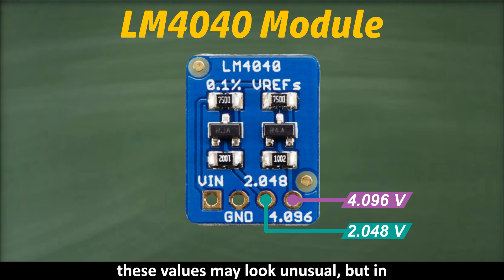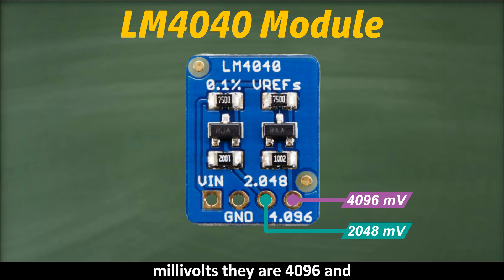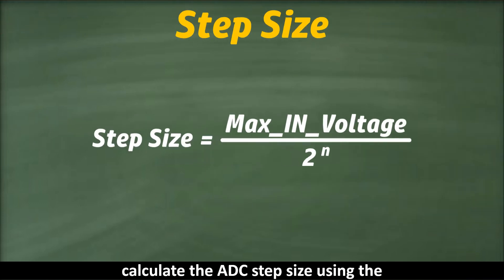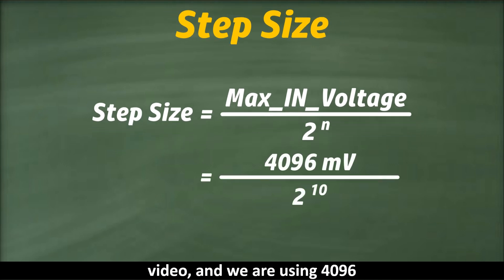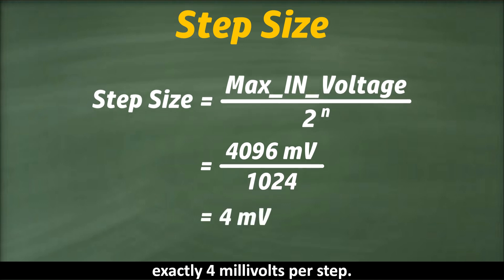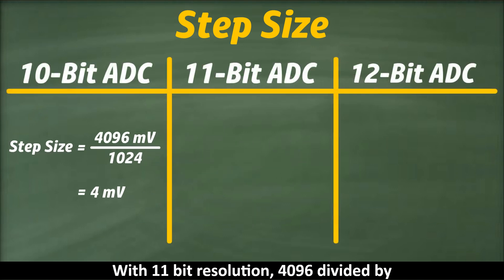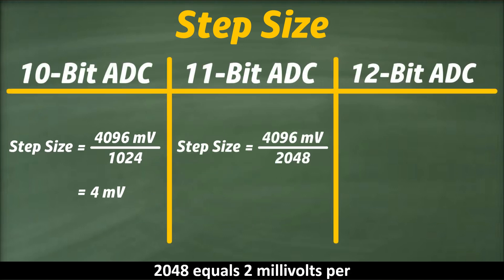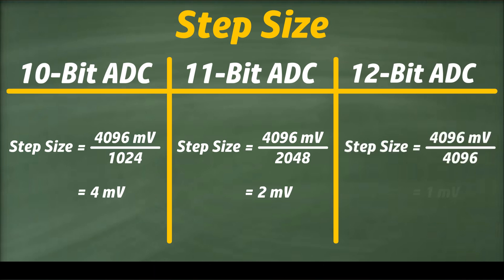At first, these values may look unusual, but in millivolts, they are 4096 and 2048. These numbers are carefully chosen because they make ADC math simple. Let's see how. Suppose we want to calculate the ADC step size using the formula we discussed in the previous video, and we are using 4096 millivolts as the reference voltage. So dividing 4096 millivolts by 1024 for a 10-bit ADC gives exactly 4 millivolts per step. With 11-bit resolution, 4096 divided by 2048 equals 2 millivolts per step, and with 12-bit resolution, 4096 divided by 4096 equals 1 millivolt per step. This makes calculations neat and predictable.